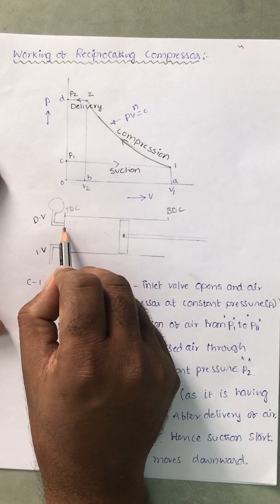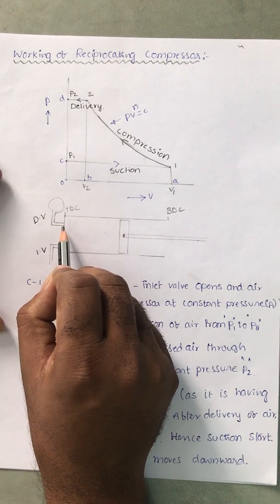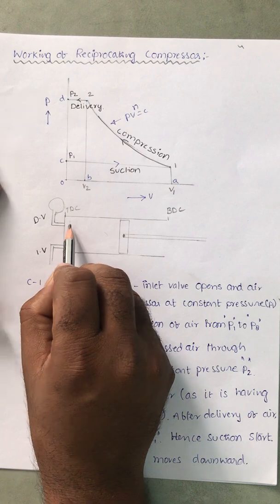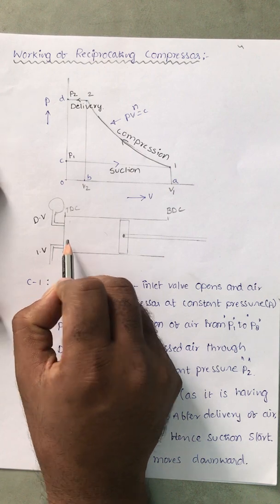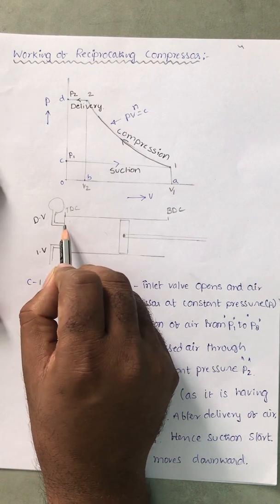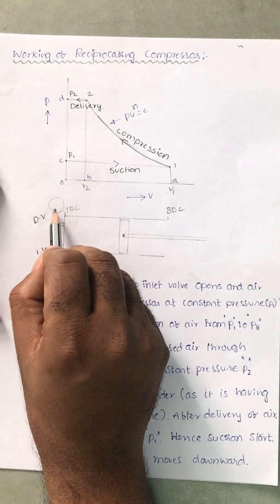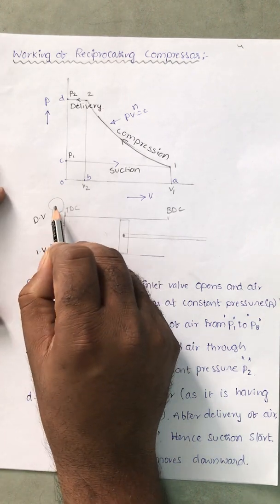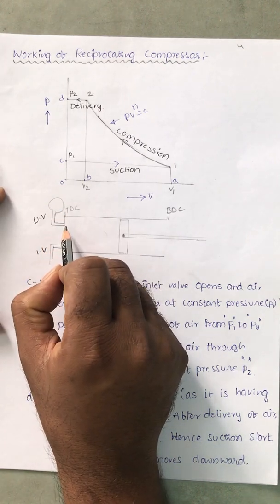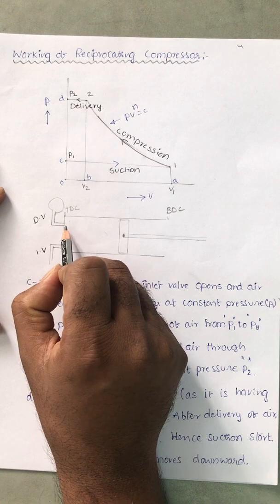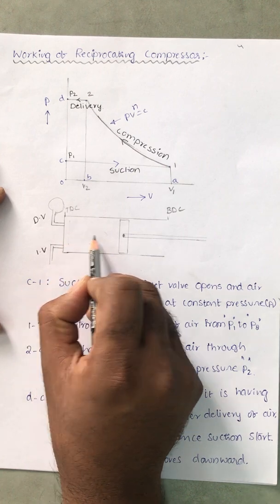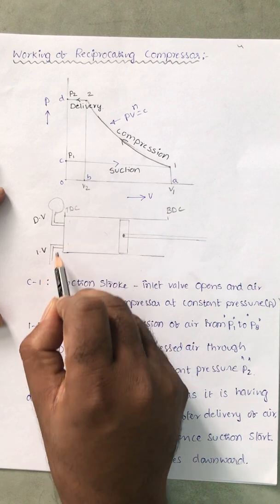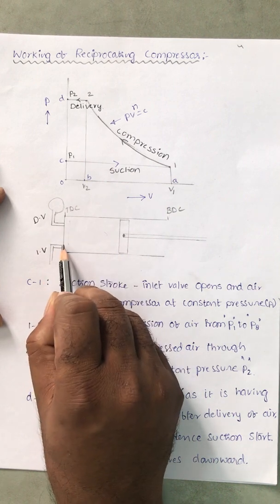Compression of air takes place until the piston almost reaches the top dead center. The delivery valve remains closed until then. Once the piston almost reaches the top dead center, the delivery valve opens and this compressed air under high pressure is sent to the container at constant pressure. Once the air is sent to the container, there is no air inside the cylinder, and the piston starts to move downward — that is the suction stroke. The delivery valve closes and the inlet valve opens again.